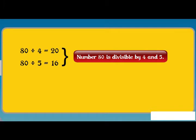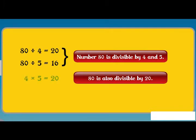The number 80 is divisible by 4 and 5. It is also divisible by 4 into 5 is equal to 20. And 4 and 5 are co-primes as their common factor is 1 only.